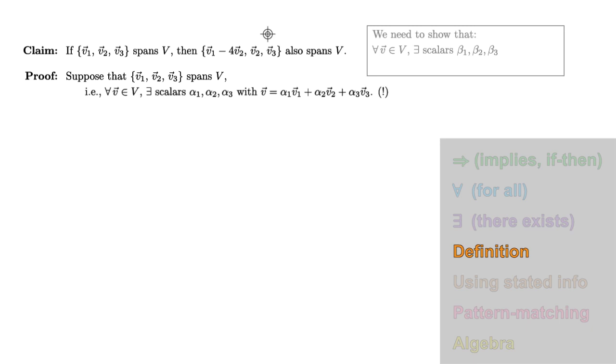There exist scalars beta1, beta2, beta3, one for each vector in our other collection. We don't know that the coefficients will be the same as for our other collection, so be sure to use different letters. So that our vector v is that linear combination of our collection: beta1 times v1 minus 4v2 plus beta2 v2 plus beta3 v3.